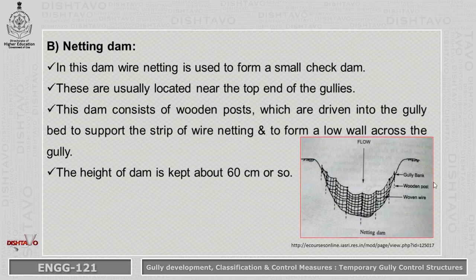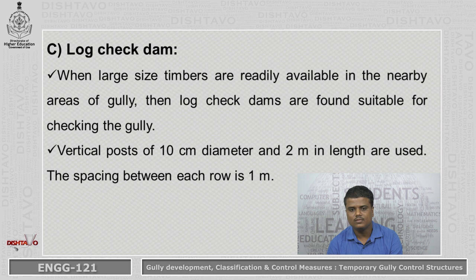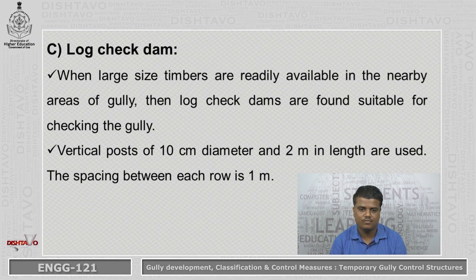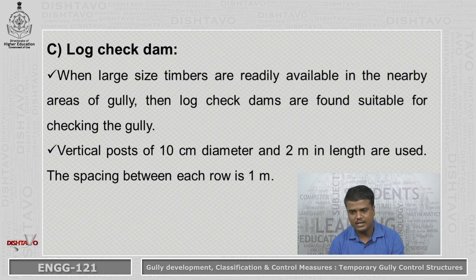Next is the netting dam. As shown in the diagram, wire netting is used to form this type of check dam. These are usually located near the top end of the gullies. These dams consist of wooden posts driven into the gully to support a strip of wire, forming a low wall across the gully. The height of this dam is up to 60 centimeter. Log check dam: when large size timbers are readily available, this dam type is used. Vertical posts of 10 centimeter diameter and 2 meter in length are used, with spacing of 1 meter between each row.